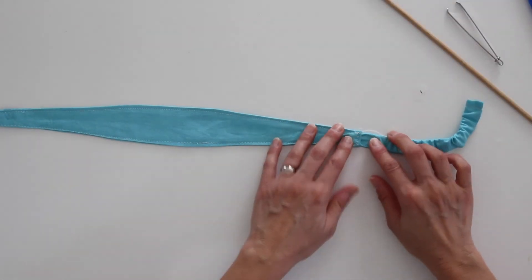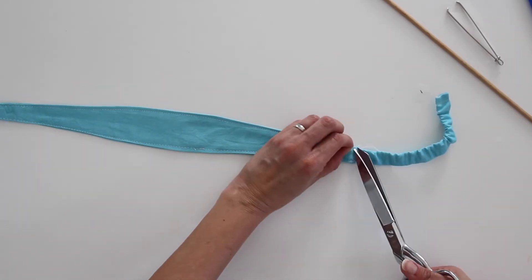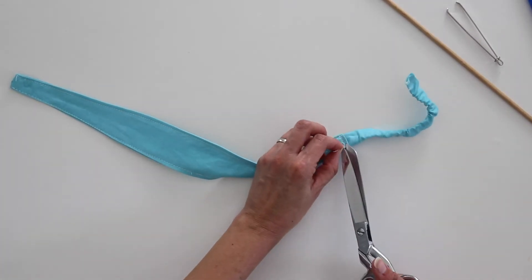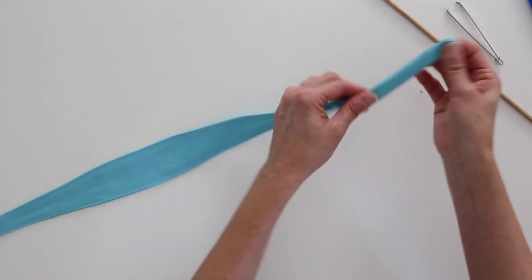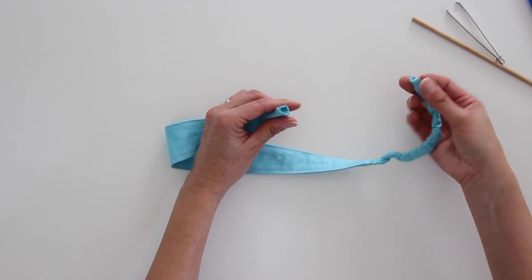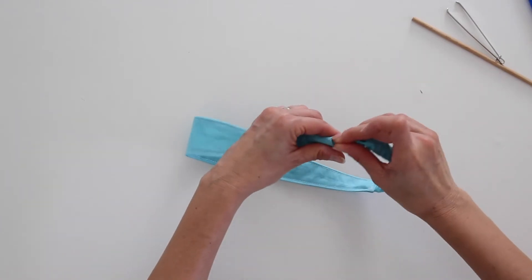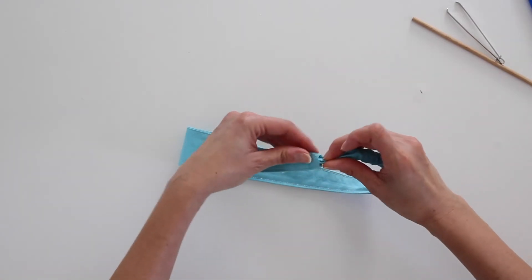All right, there we go. That end is done. I'm going to trim the threads and then I need to do the same thing to the other end. Make sure you don't twist your elastic as you're putting it into the other end.